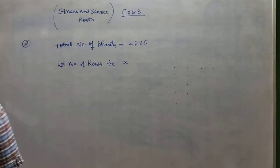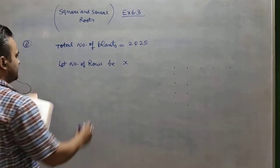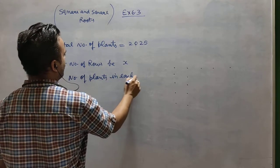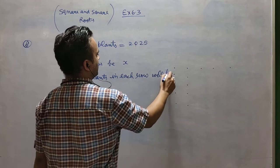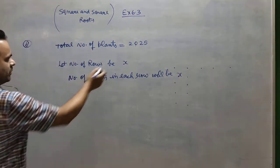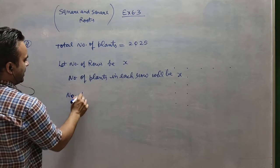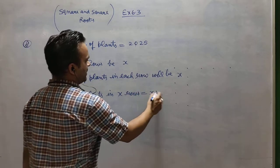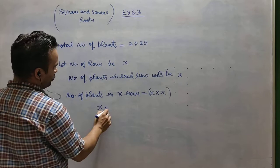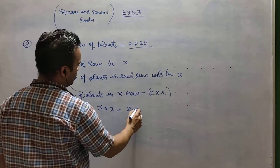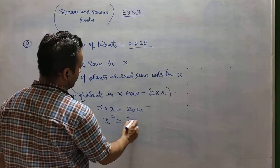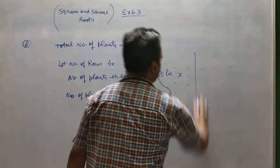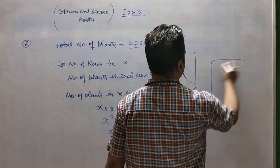Let the number of rows be X. The number of plants in each row will also be X. Number of plants in X rows = X×X = X². So X² = 2025, and X = √2025. We find the square root by prime factorization: dividing by 3 gives 675, then 225, 75, 25, 5.